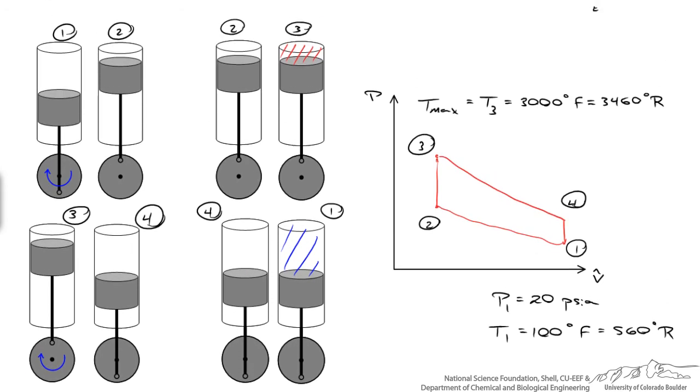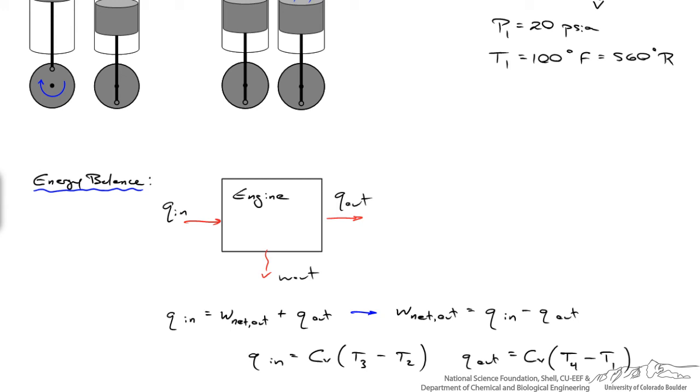So on our diagram, Q in occurs between steps two and three. And if we drew it on the PV diagram, here was Q in between two and three. And Q out occurs between four and one. And in a real engine, this would be expelled as exhaust. And because both of those occur at constant volume, Q in is instantaneous, the volume doesn't change. We can figure out the amount of heat entering the system is simply the increase in its internal energy, or it's CV times the difference in temperature between state three and state two. And Q out is equal to CV times the difference in temperature between state four and state one. So we do know T three, it's the maximum temperature of 3460 Rankine. And we do know T one, it's the temperature of air being drawn into the system. But we don't know T two, and we don't know T four.